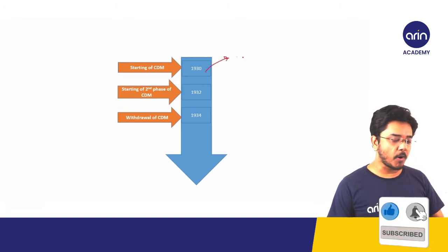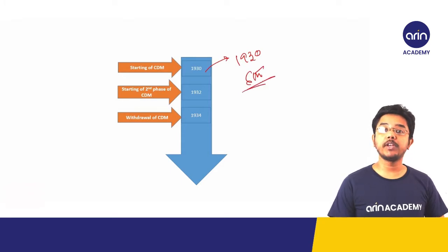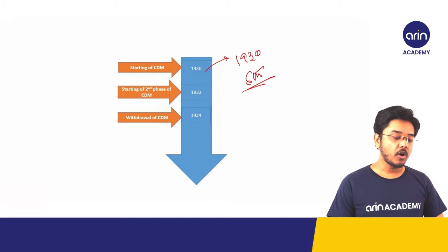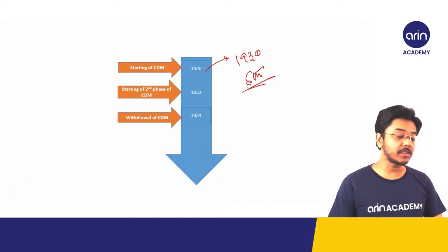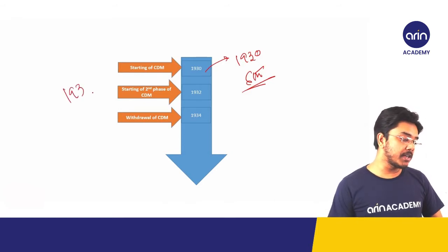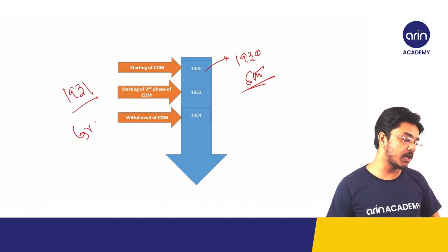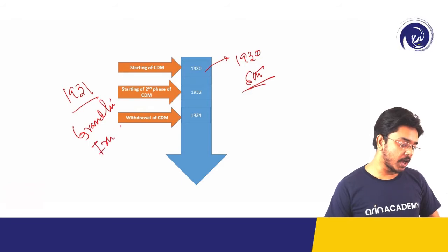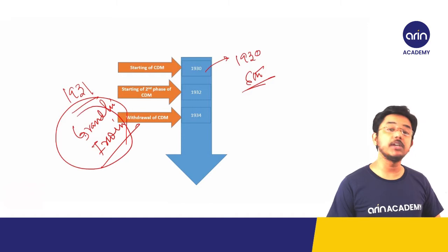The most important year here is 1930. On the 6th of April 1930, the Civil Disobedience Movement was launched. Gandhi went to Dandi on the 6th of April 1930, broke the salt law, and that's how the Civil Disobedience Movement started. During 1931, when the Civil Disobedience Movement was at its peak, the Gandhi-Irwin Pact took place.